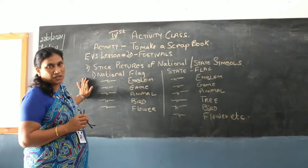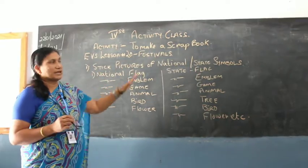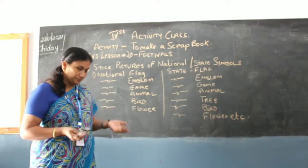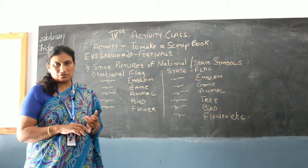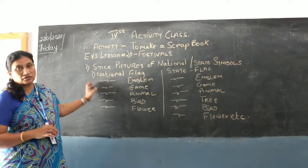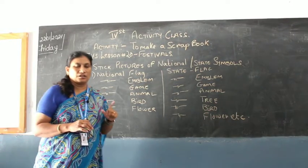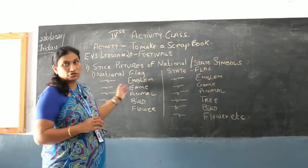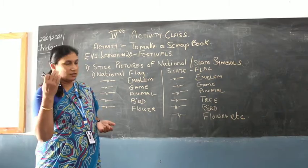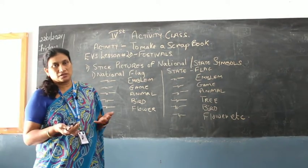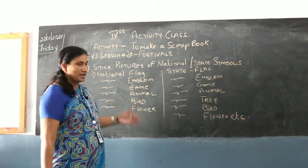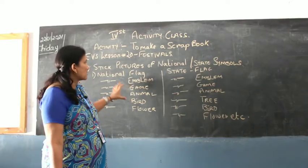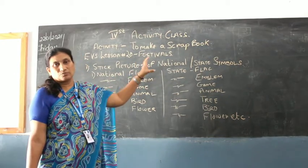Based on national festivals, you have to stick pictures of your national and state symbols. For national symbols, you have your flag — the tricolor — then the three lions, which is the emblem, the national game, the national animal, the national bird, and the national flower. Cut reasonable-sized pictures and stick them under the theme of national symbols.